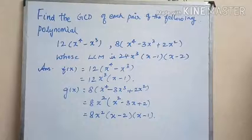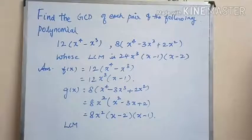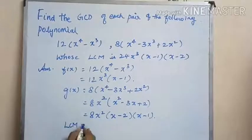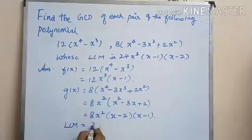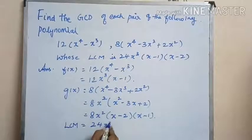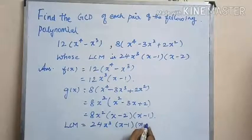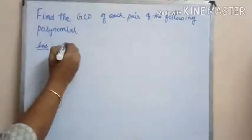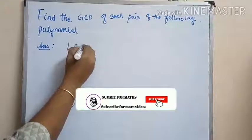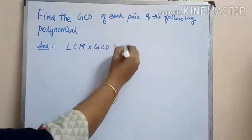The LCM of these two polynomials is given to be 24x cubed into (x minus 1) into (x minus 2). The LCM into GCD is equal to f(x) into g(x).